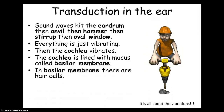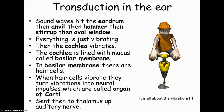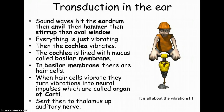The cochlea is lined with the basilar membrane, and this is that process of transduction. The basilar membrane has hair cells, and those hair cells start to vibrate. Those vibrations turn into neural impulses, and these are called the organ of Corti. Once that becomes a neural impulse, it's sent up the auditory nerve to the thalamus, and then generally to the temporal lobe.